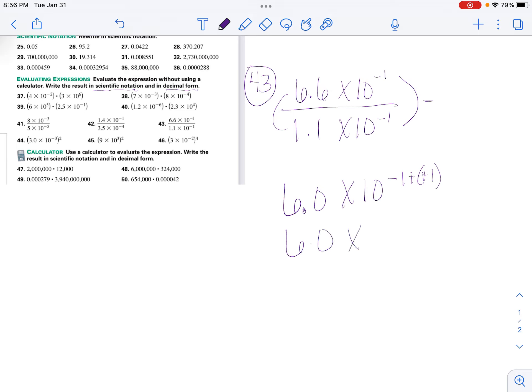I bring down my 6.0 times 10, and 1 minus 1 is 0. That becomes 6.0 times 10 to the 0. Anything to the power of 0 is 1, so the answer is 6.